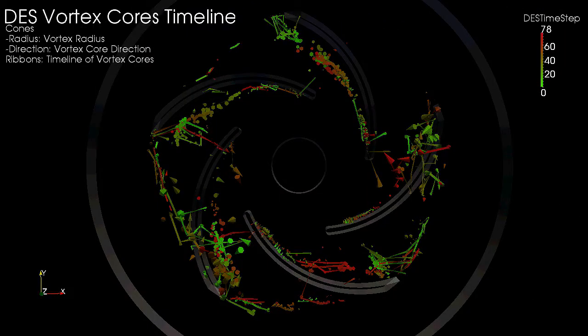To analyze a single dataset, we take advantage of the larger empty space to introduce cone glyphs. Each cone marks the position and orientation of a vortex core, and the size of the cone is scaled by the vortex radius. We use very thin ribbons to connect vortex cores.